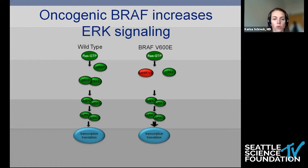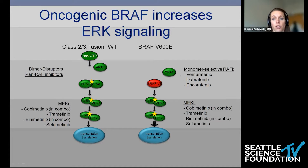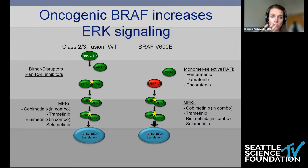For wild-type BRAF to be active, BRAF needs to dimerize with another BRAF, CRAF, or ARAF molecule to activate downstream signaling. BRAF V600E is sufficient by itself to activate downstream signaling. There are an array of FDA-approved drugs for BRAF V600E — the monomer-selective RAF inhibitors Vemurafenib, Dabrafenib, and Encorafenib paired with MEK inhibitors. These will be effective against mutant BRAF only. We think of these drugs as making it more likely for wild-type BRAF to find a partner and bind, so they can paradoxically increase ERK signaling in cells that don't have a V600E mutation.